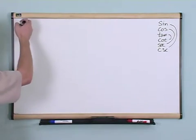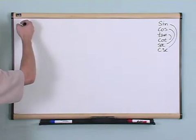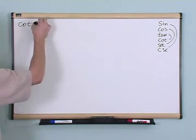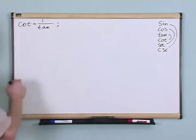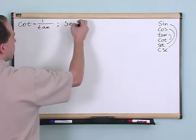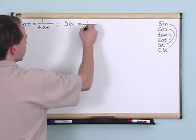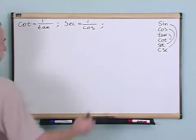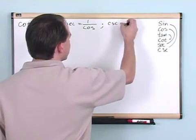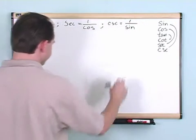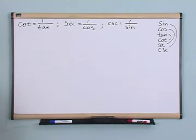And those are actually trig identities. So let's go ahead and write them down and we'll use them to do some simplification. For instance, cotangent equals 1 over tangent. Secant was 1 over cosine. And cosecant was 1 over sine.